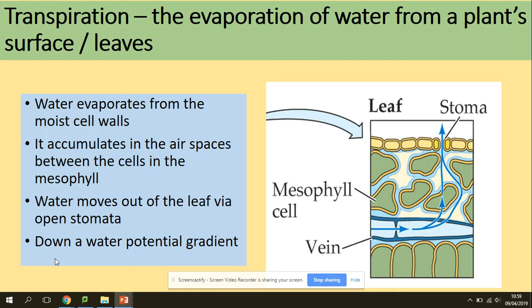What is transpiration? It's the evaporation of water from a plant's surface leaves. Water evaporates from the moist cell walls, accumulates in the air spaces between cells in the mesophyll, and water moves out of the leaf through the open stomata down a water potential gradient.